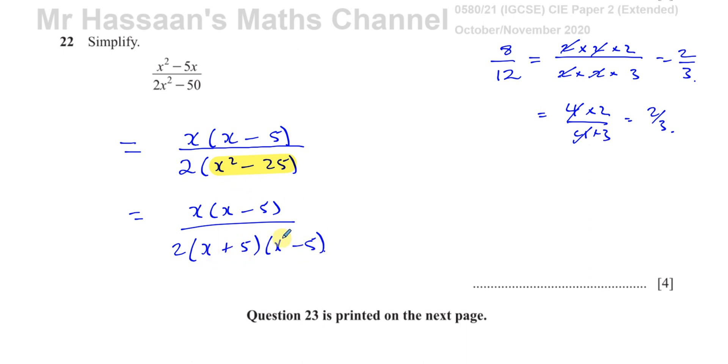This is the difference of squares which splits up to two brackets. In one of them you have a plus, the other one you have a minus and you have the square root of each term in these places. So x plus 5, x minus 5, when you expand that, you get x squared minus 25.